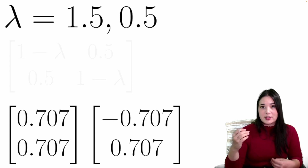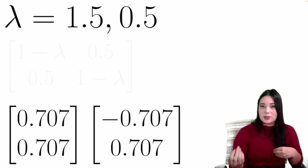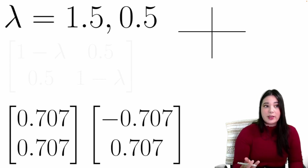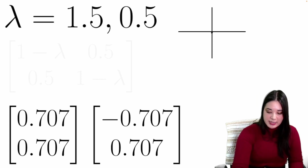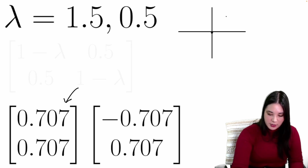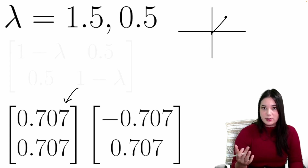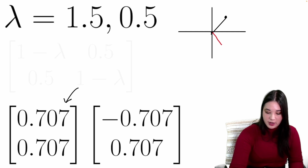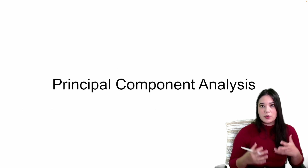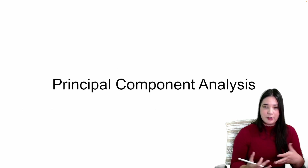Here our eigenvalues are 1.5 and 0.5. An eigenvalue greater than 1 indicates stretching; between 0 and 1 indicates squishing. Once we have these eigenvalues, we plug them back into the matrix to get our eigenvectors — the directions of stretch and squish. For example, starting at (0,0) and going to (0.71, 0.71) gives us the direction of stretch, and the other eigenvector gives the direction of squish.